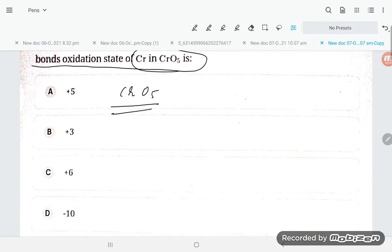You see how the structure is. Here's chromium with a double bond oxygen here, oxygen here, oxygen here. These oxygens are there.